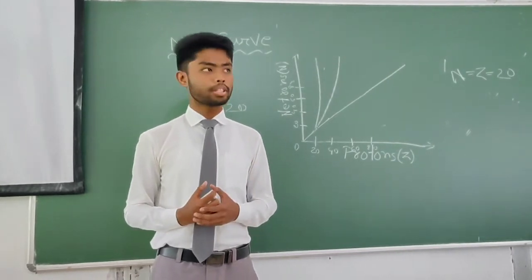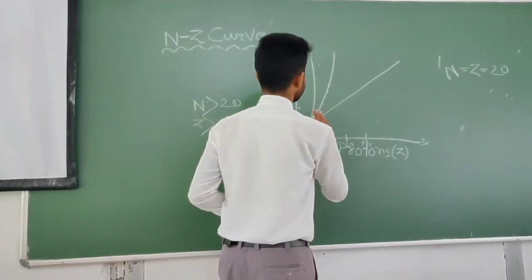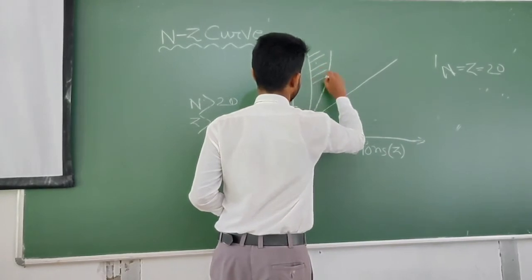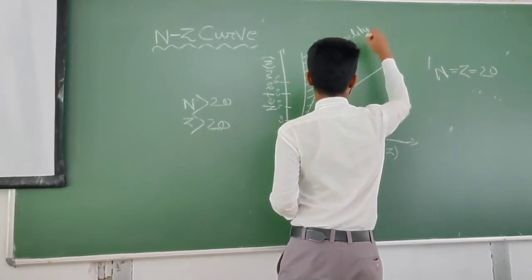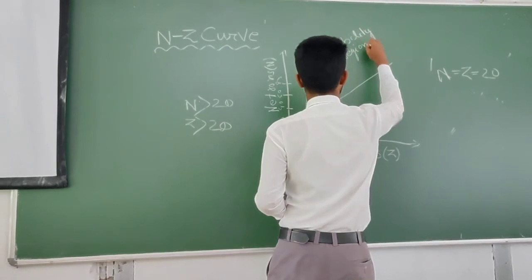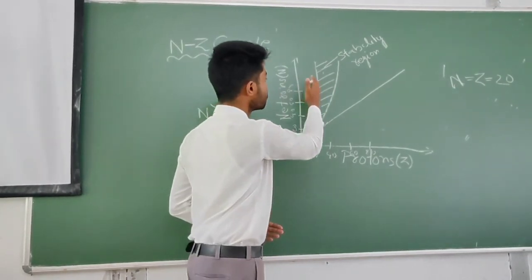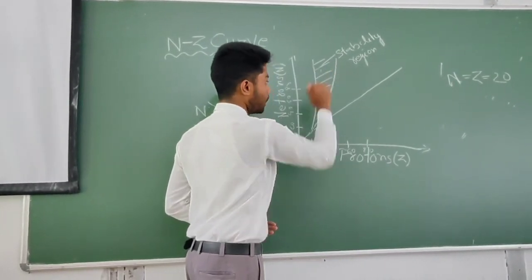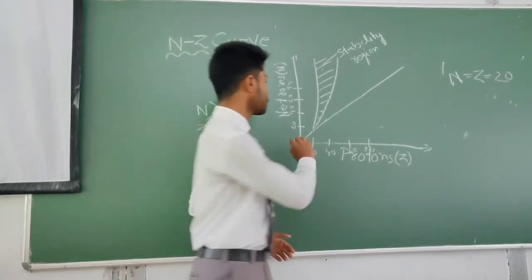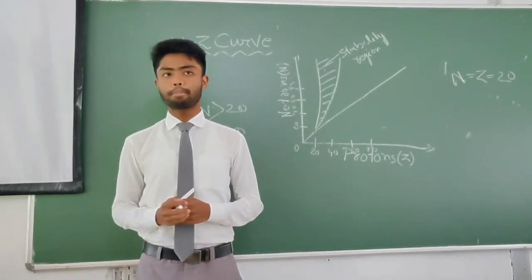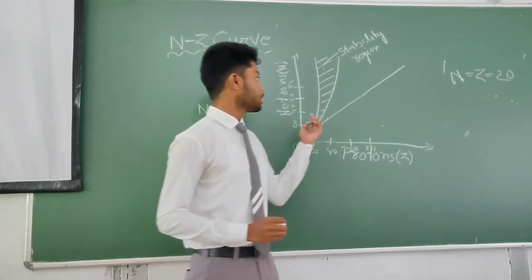So to compensate this Coulomb repulsive effect, this stability curve for stable nuclei turns towards the neutron axis. And between these two curves, this shaded region is called the stability region. The stable nuclei are only found in this stability region — not above and not below. Also, whenever the lighter nuclei fall, they fall on the straight line, because the lighter nuclei have the same number of protons and neutrons. So for this reason, lighter stable nuclei lie on that straight line.